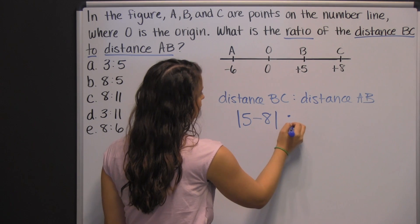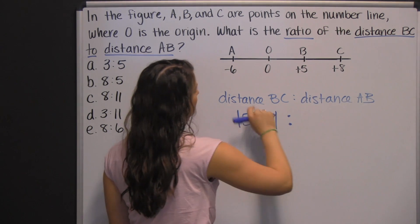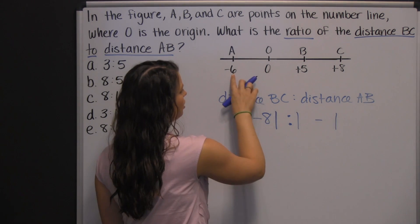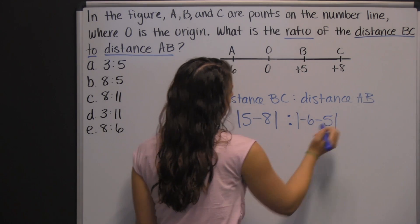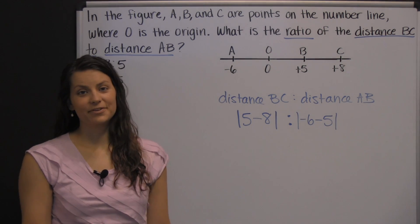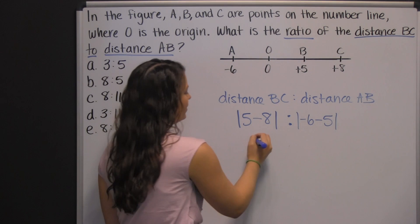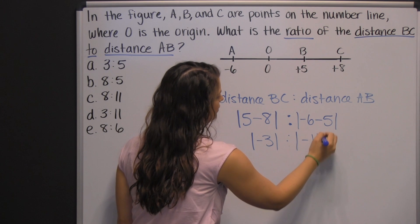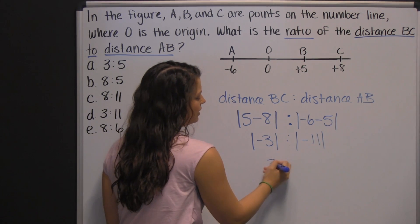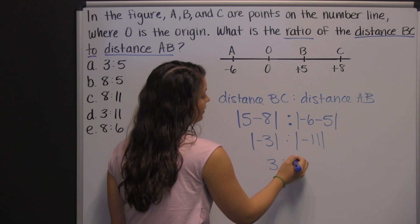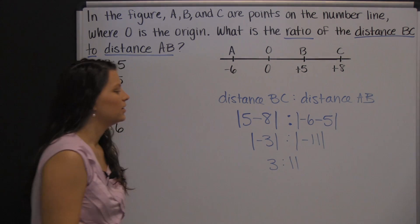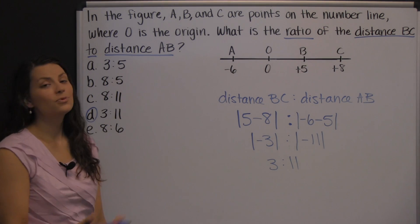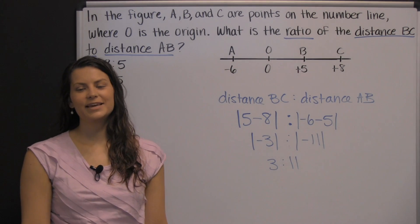For the distance AB, same thing — we want the absolute value of the difference. Going in order: the absolute value of negative six minus five. So this would be the absolute value of negative three to the absolute value of negative eleven. The absolute value of negative three is three, and the absolute value of negative eleven is eleven. So your ratio is three to eleven. That's one example of the type of problem you'll see when you take the HiSET.